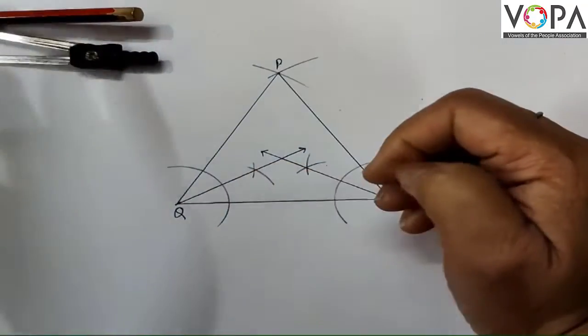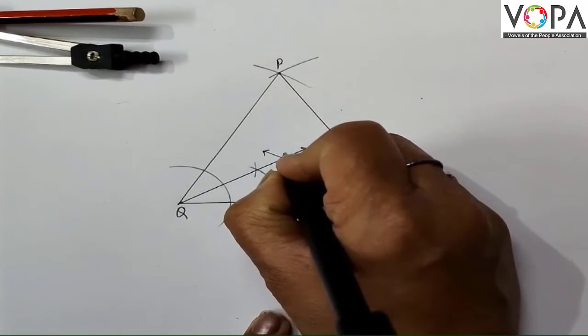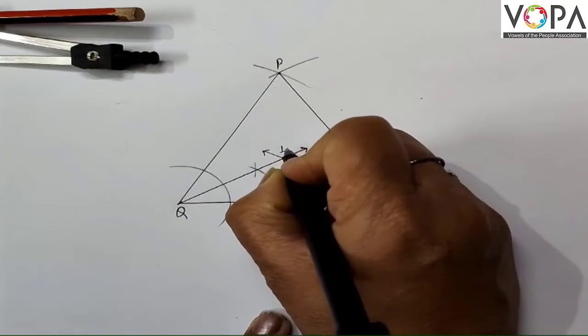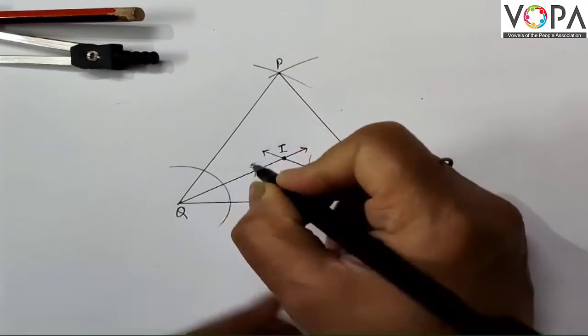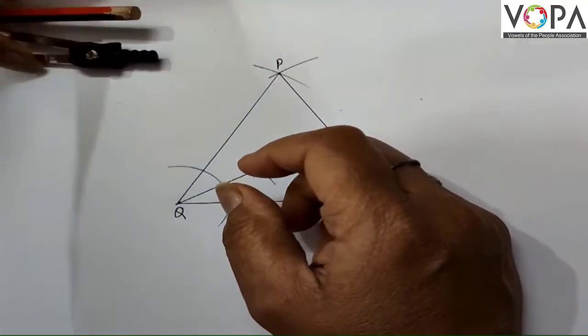You can erase all these long arcs and make it neat. Now, this point where these two are touching is called the in-center. This is the in-center of the in-circle we are going to draw.